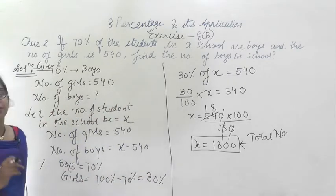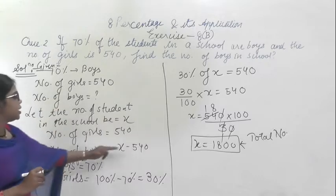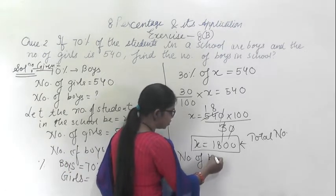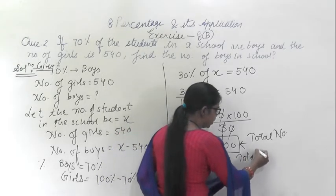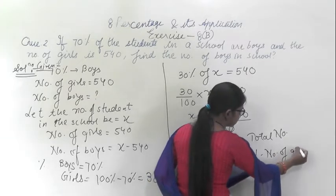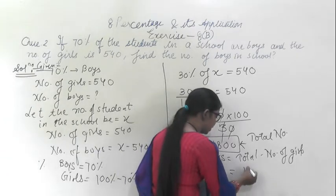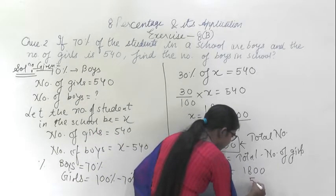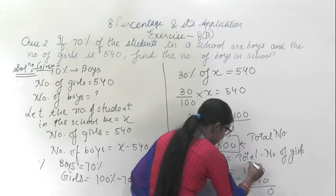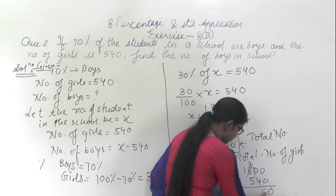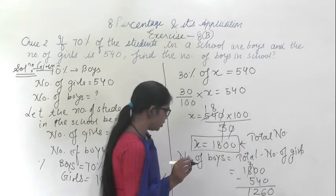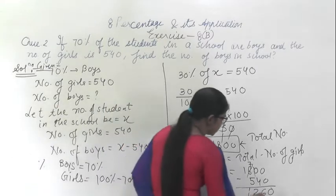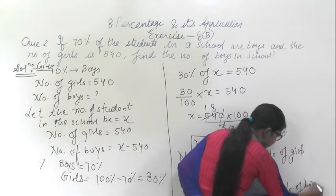We have to find the number of boys in the school. Number of boys equals total minus number of girls, that is 1800 minus 540. Subtracting gives 1260. So 1260 is the total number of boys in the school. This is the answer.